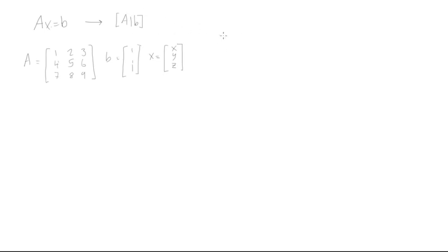So [A|b], let's start right here. [A|b] is going to be equal to the coefficient matrix 1, 2, 3, 4, 5, 6, 7, 8, 9. And then on the b side we have 1, 1, 1.